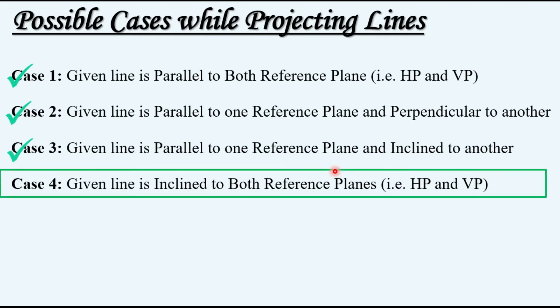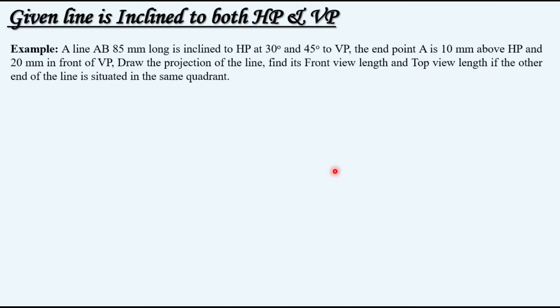Today we will see case four, where the line is inclined to both reference planes. To have a better understanding, let's take an example. A line AB, 85 mm long, is inclined to HP at 30 degrees and to VP at 45 degrees. The endpoint A is 10 mm above HP and 20 mm in front of VP. Draw the projections of the line and find its front view length and top view length, given that the other end of the line is situated in the same quadrant.